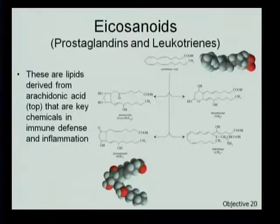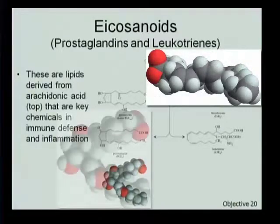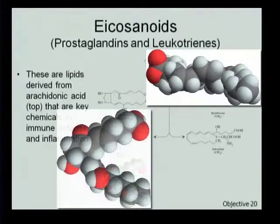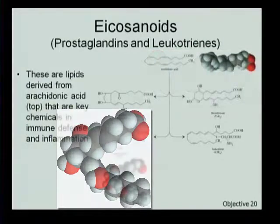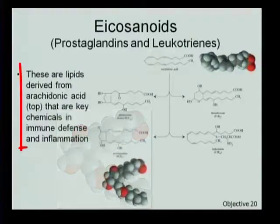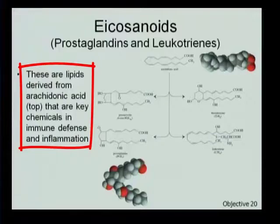Lipids can be important signaling molecules. The signaling molecules shown here are eicosanoids — the prostaglandins and the leukotrienes. We won't learn much about them in this course, but in human medicine they're very important for regulating the process of inflammation — when the body mounts a defense against a perceived invader. So prostaglandins and leukotrienes are going to be an important set of mediators that regulate the process of nonspecific immune defense or inflammation.